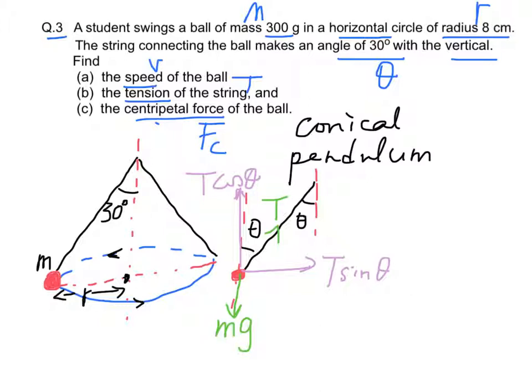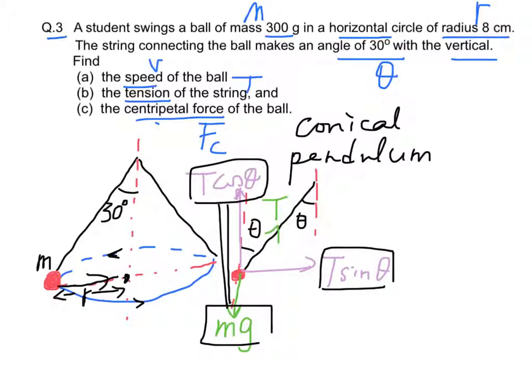First, T cos θ balances the weight, therefore they are equal. Next, T sin θ is pointing towards the center of the circle, therefore it is the centripetal force needed.